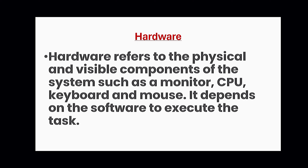What is hardware? Hardware refers to the physical and visible components of the system such as a monitor, CPU, keyboard and mouse. It depends on the software to execute the task. Hardware refers to the parts of the computer which are physical, which have an existence, which we can touch and which we can see.